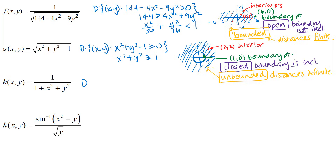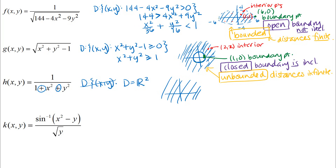For this next function, the domain is the set of all (x, y) such that the denominator is not zero. But that denominator is never going to be zero — there are no ordered pairs (x, y) that would make it zero, since we're squaring the x's and y's and adding 1. So the domain is all of R². Every ordered pair in R² is in the domain, and every point is an interior point of this region.